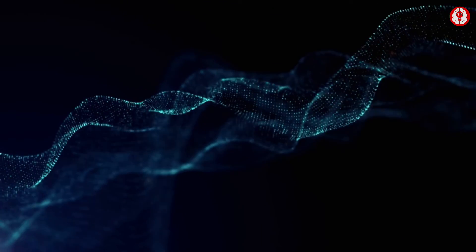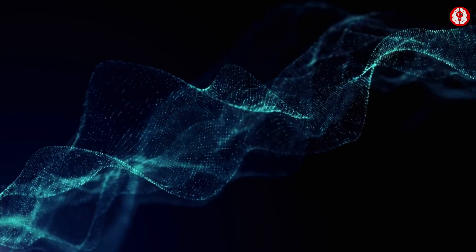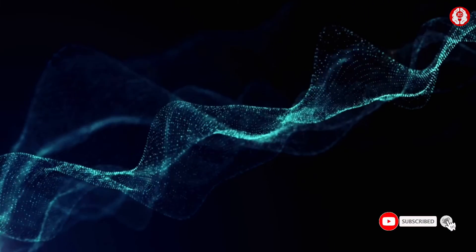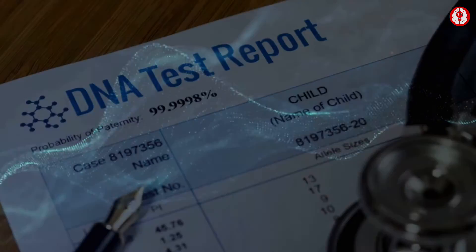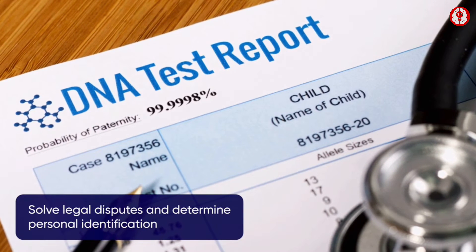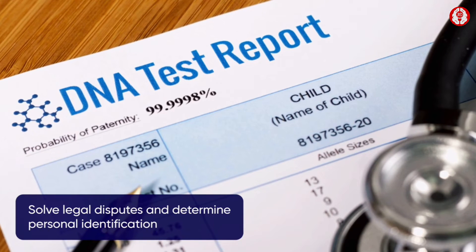Now that we know how incredibly useful DNA fingerprinting is in crime investigations, let us learn about its other applications. The process is used to solve legal disputes to determine paternity and also for personal identification.